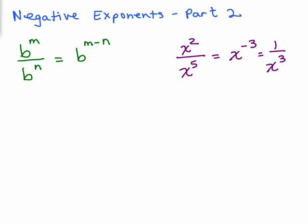Let's continue working a little bit more with negative exponents. Looking at the quotient rule, note we write b to the m over b to the n equals b to the m minus n.